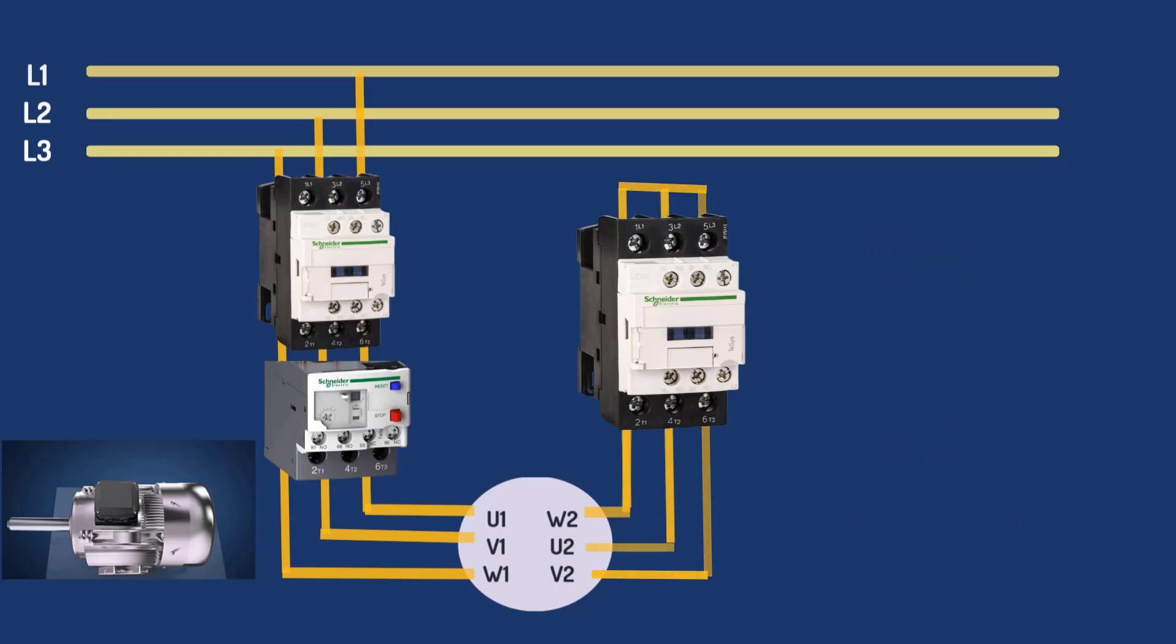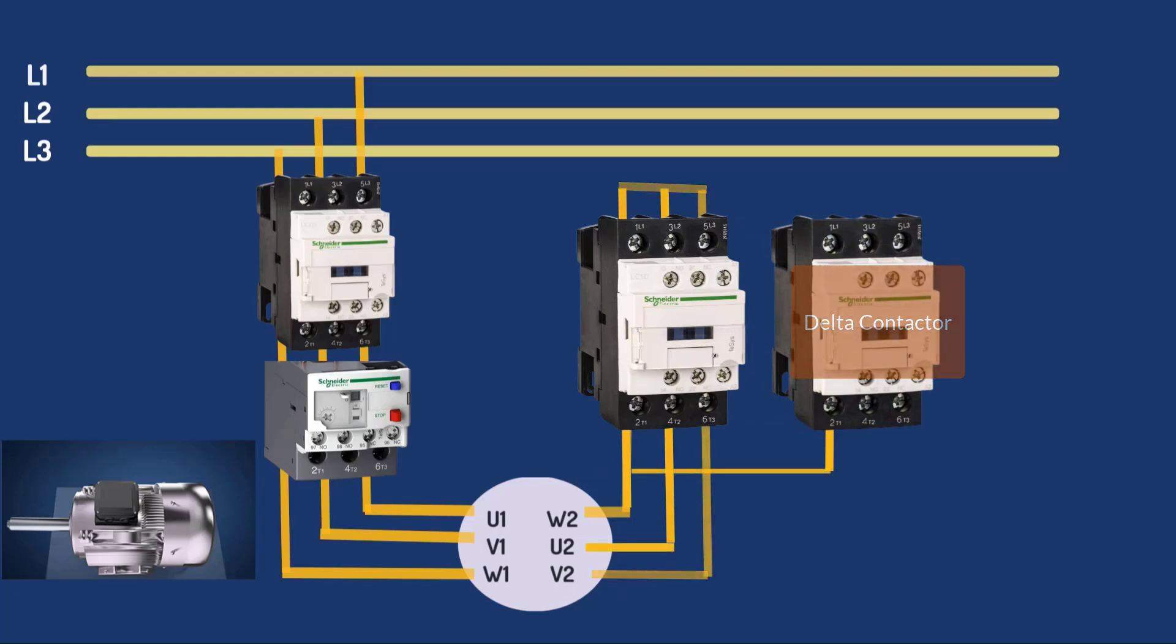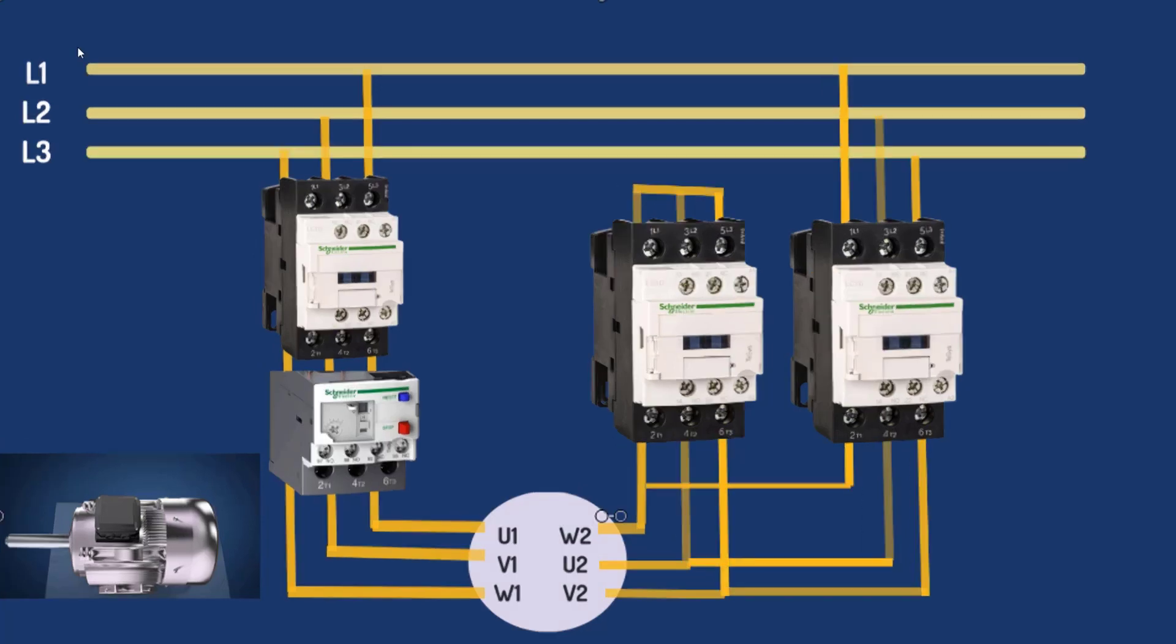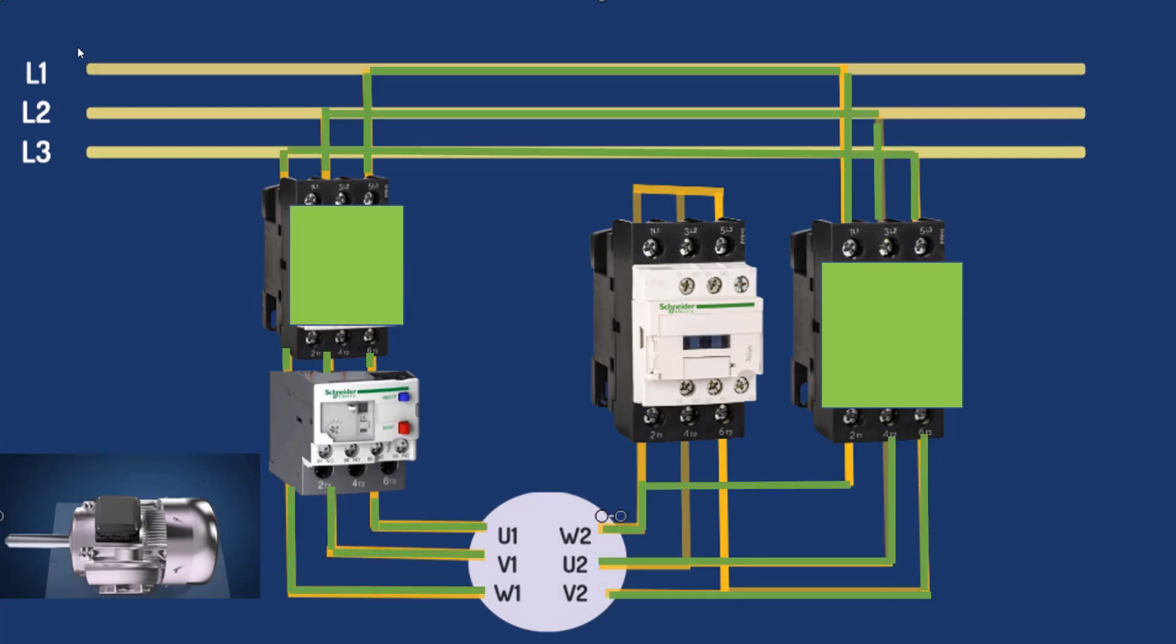Which means the delta contactor is now on. In delta motor winding connection, we will add another contactor here and connect it to W2, U2, and V2 terminals of the motor. We would wire the other end of the contactors to L1, L2, and L3 respectively. When main and delta contactors are energized, U1 will be connected to W2, V1 to U2, and W1 to V2. In this case, the motor will run in delta connection.